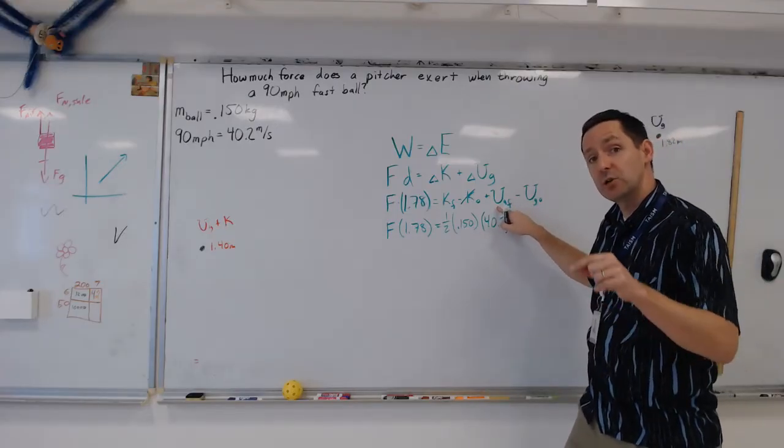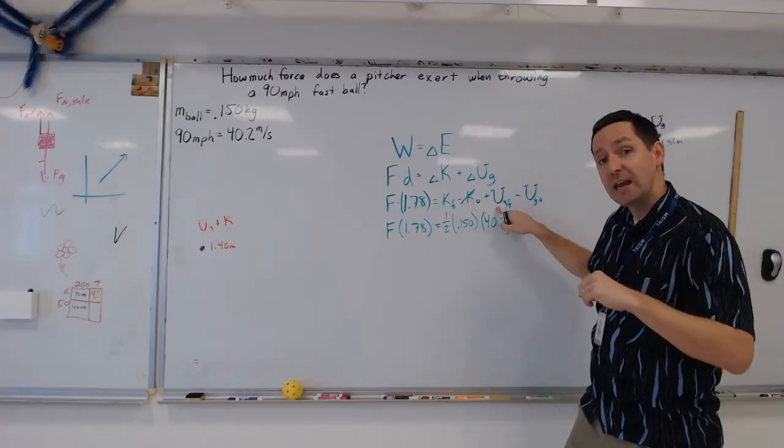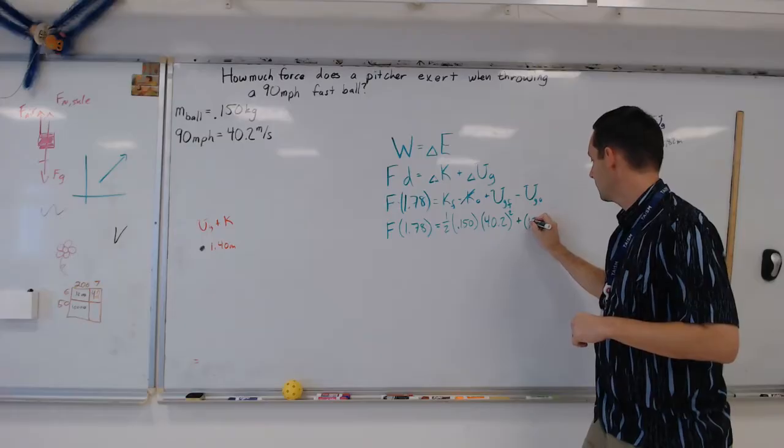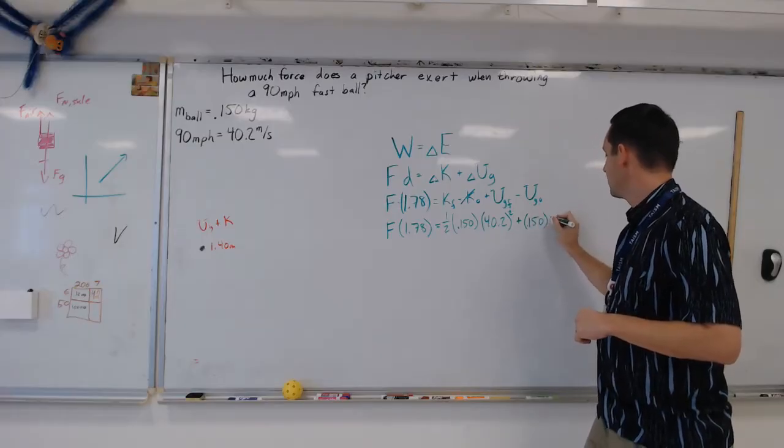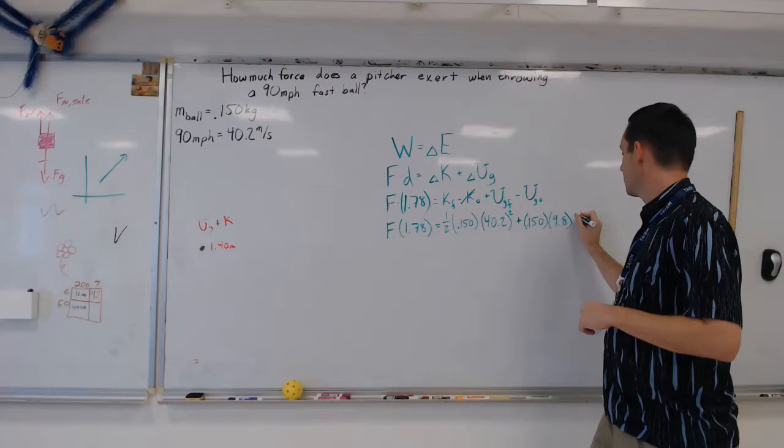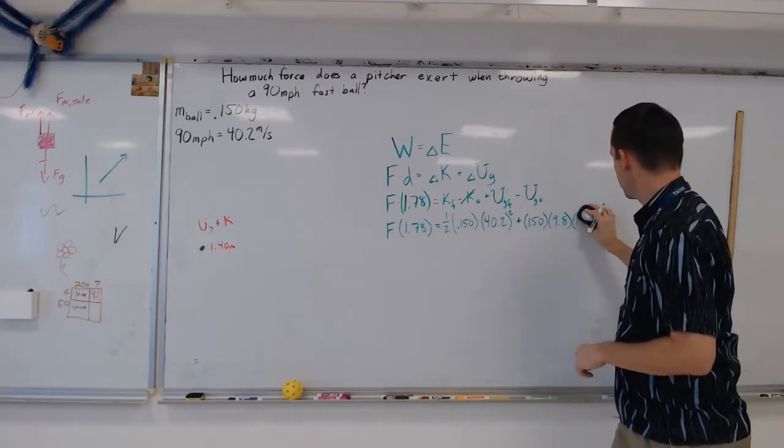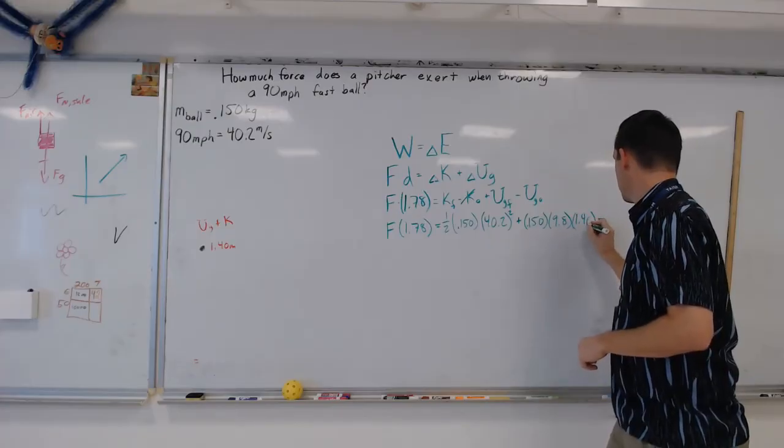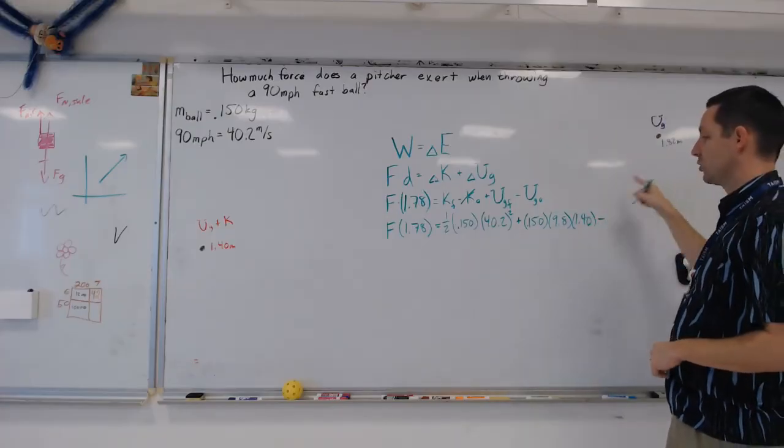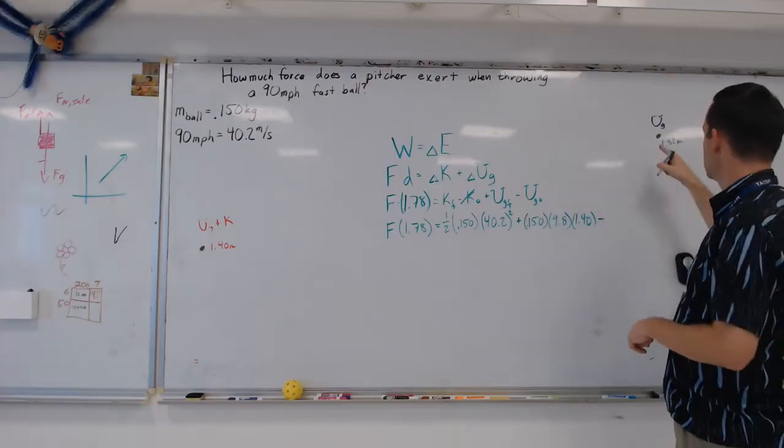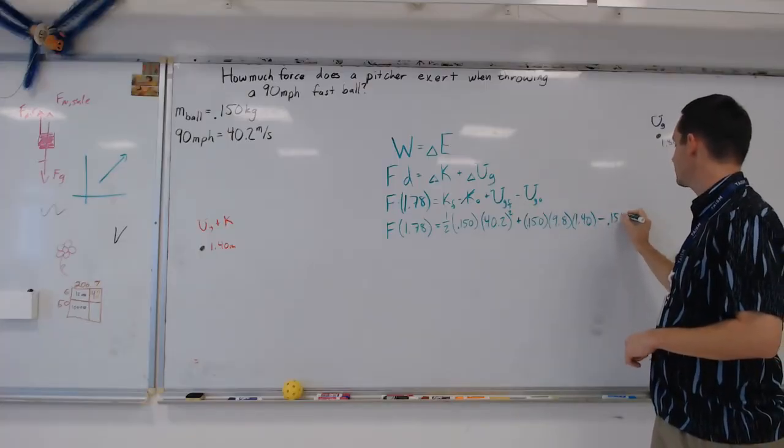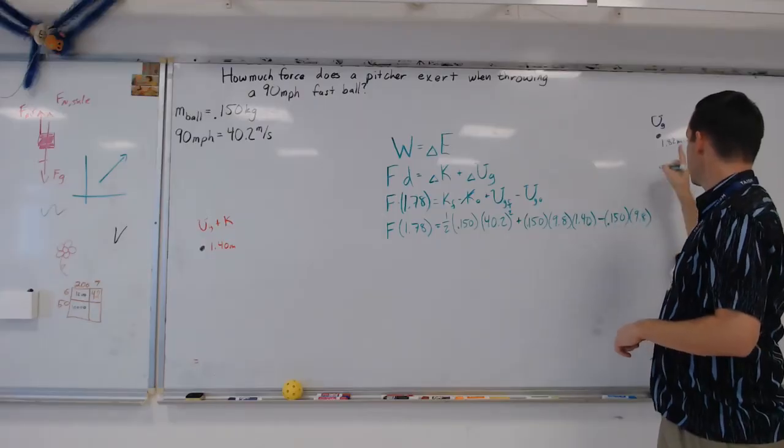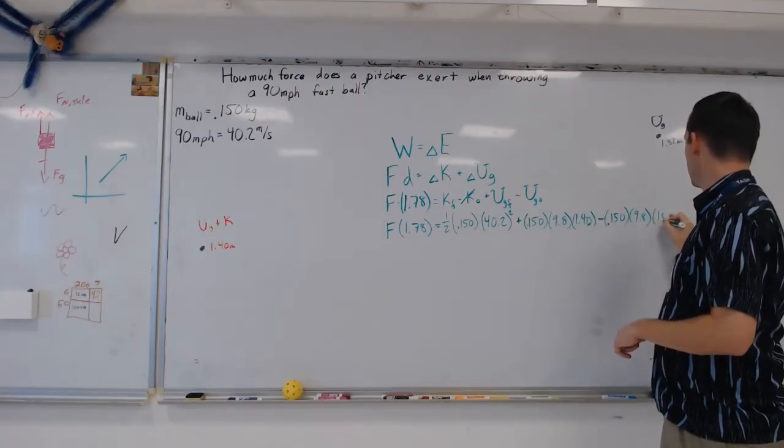Plus the gravitational potential energy final. Remember, gravitational potential energy is mgh. So it'll be the mass again, which is that 0.150 times G, which is 9.8. The height there was 1.40, minus the initial. Final minus initial. So again, we'll just go 0.150 times 9.8 times the height there, which is 1.82.